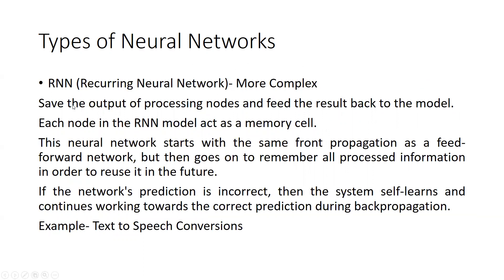The next type is the Recurrent Neural Network (RNN), which is a more complex kind. In RNN, the output of processing nodes is saved and fed back into the model. Each node acts as a memory cell, storing information. It starts with forward propagation like a feed forward network but remembers all processed information for reuse. If the network's prediction is incorrect, the system self-learns through back propagation. An example is text-to-speech conversion.